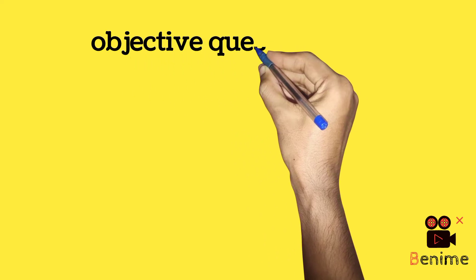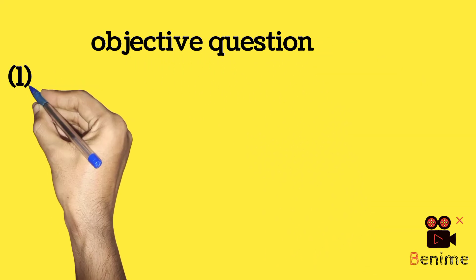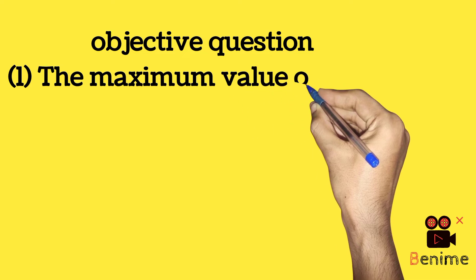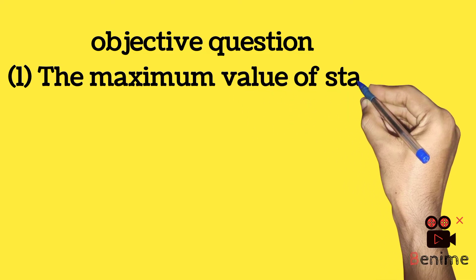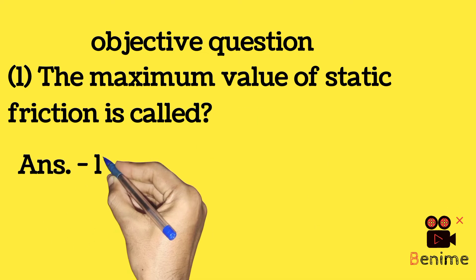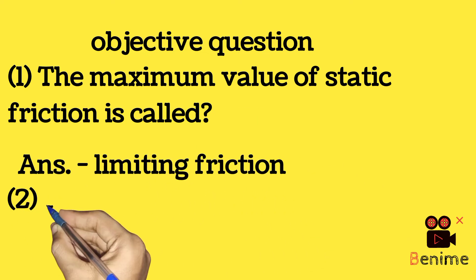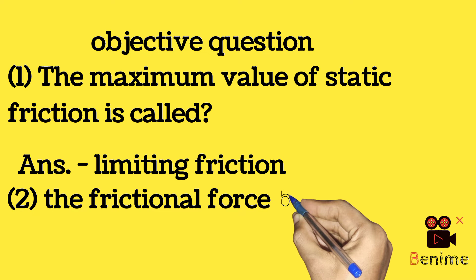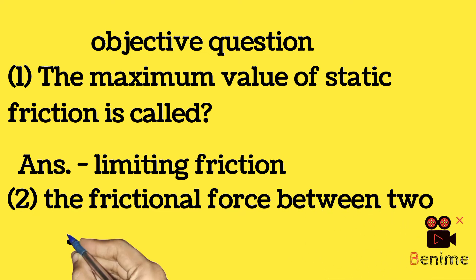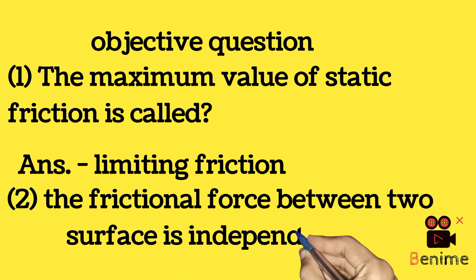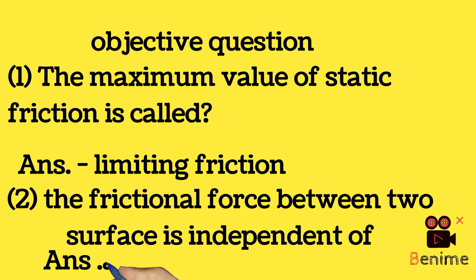Objective question. First question: the maximum value of static friction is called — answer: limiting friction. The frictional force between two surfaces is independent of — answer: area of contact.